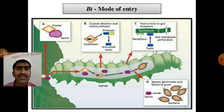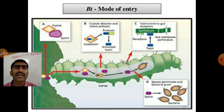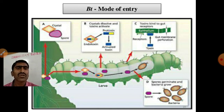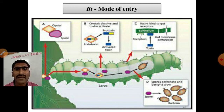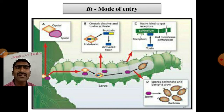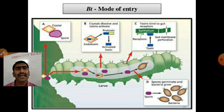A question arises: if a child or a goat eats cotton leaves, will they die? The answer is no. BT cotton does not affect human beings or animals because we have a highly acidic pH in our gut, and only in alkaline pH is this crystal protein activated. Since our stomach has a highly acidic pH, if we, a goat, a cow, or any other animal eats it, the endotoxin will have no effect — it is not harmful to them. Alkaline pH is required to activate the crystal protein.